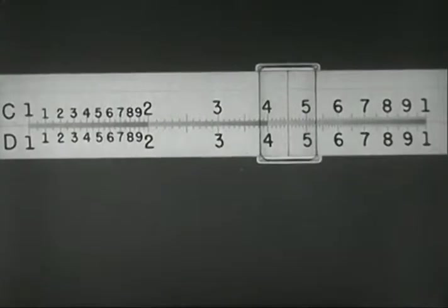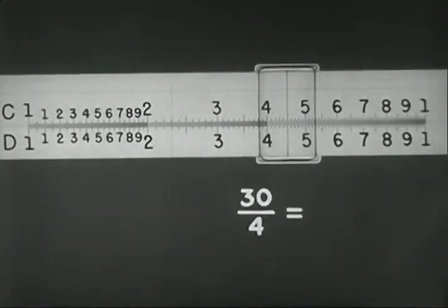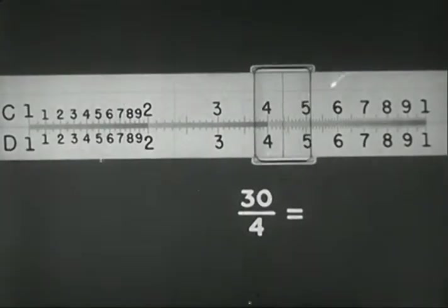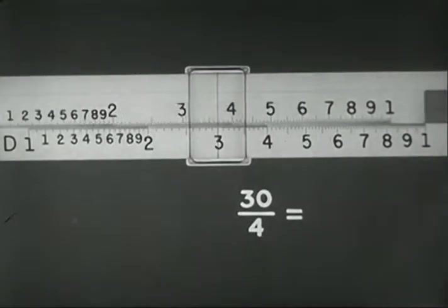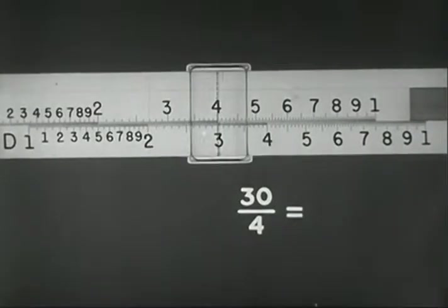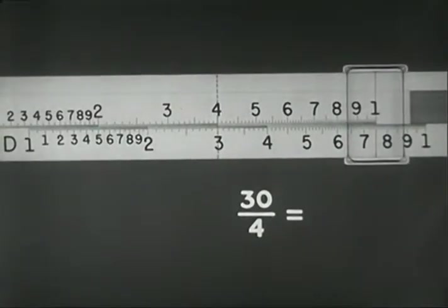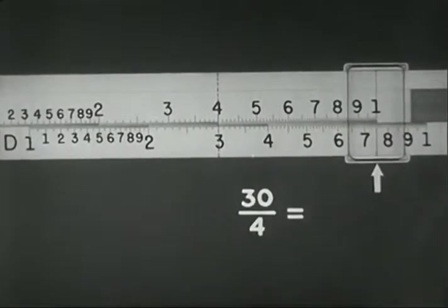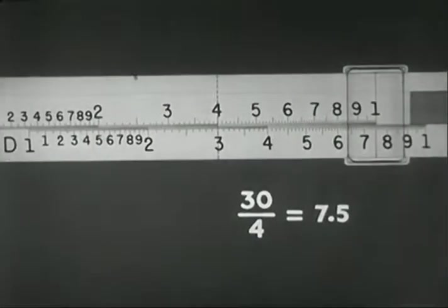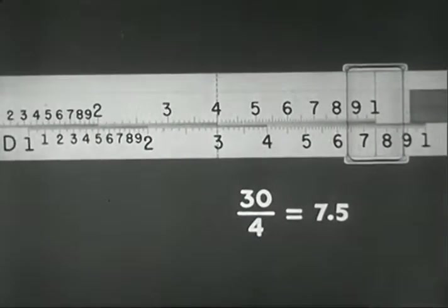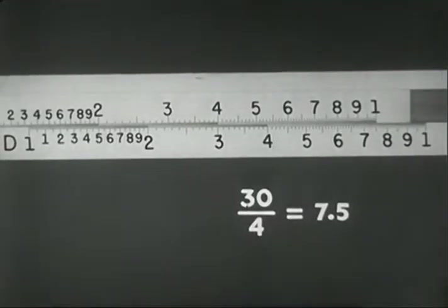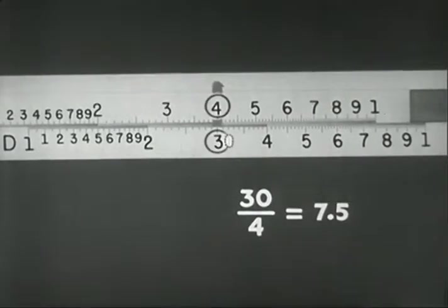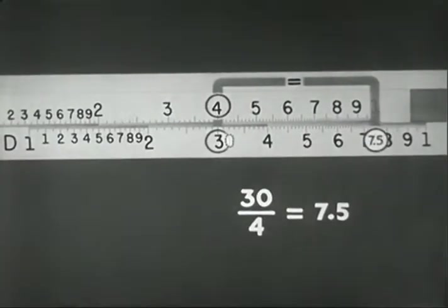To review an example in division, say 30 divided by 4. First, find 3 on D, and to it slide 4 on C. Move the hairline to the index, and read the answer 7.5 on D. Again, the ciphers and decimals required are added mentally. Division procedure may be diagrammed like this: 30 divided by 4 equals 7.5.